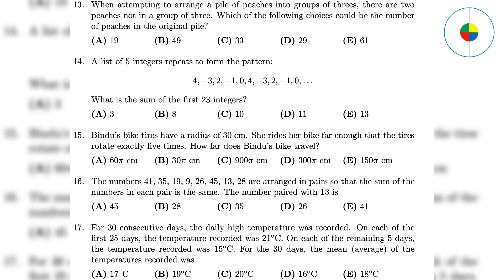Question 17: The sum of the first 25 days is 25 times 21, which is 525. The sum of the remaining 5 days is 5 times 15, which is 75. The sum of all days is 525 plus 75, which is 600. 600 divided by 30 days gives an answer of 20.